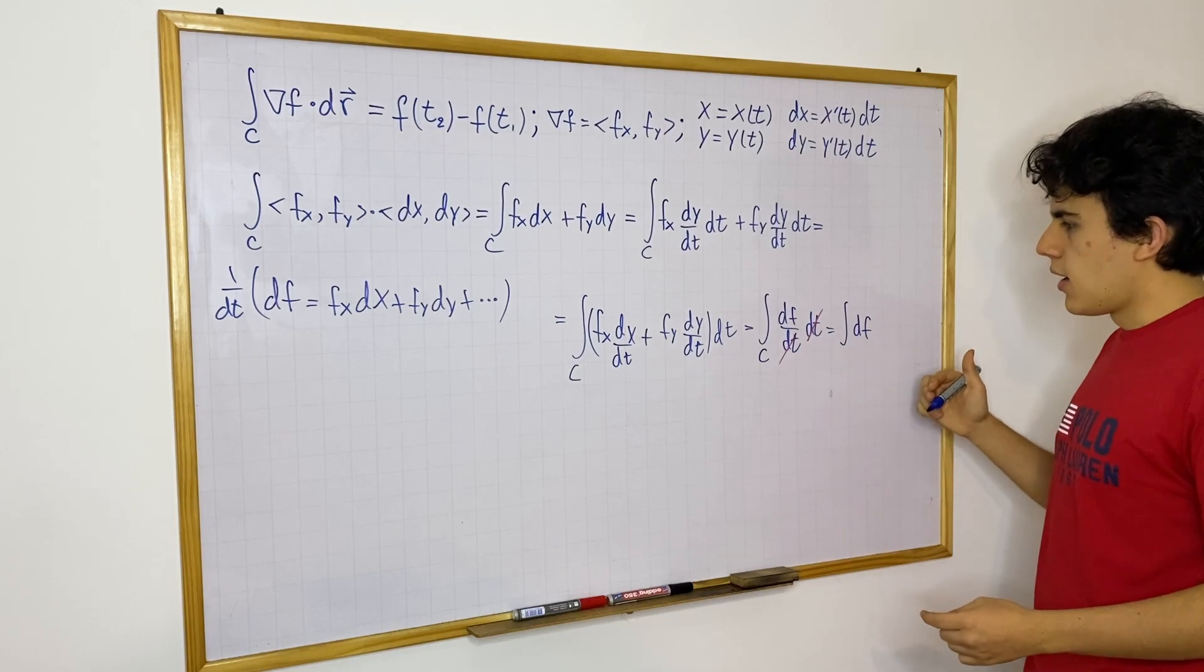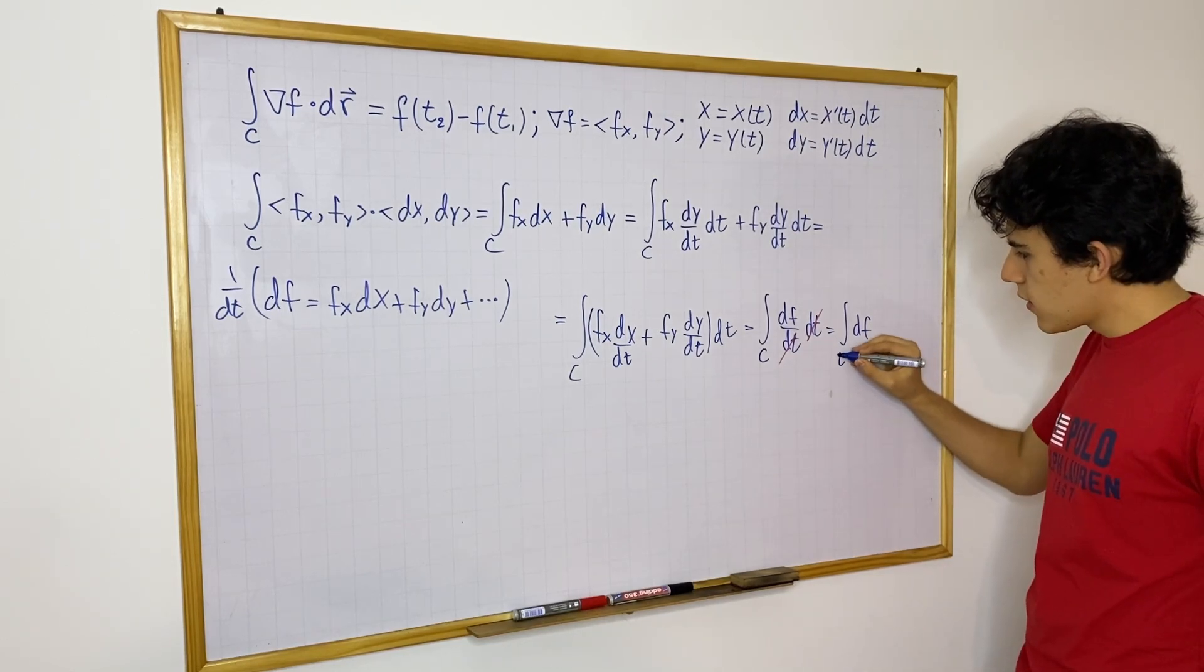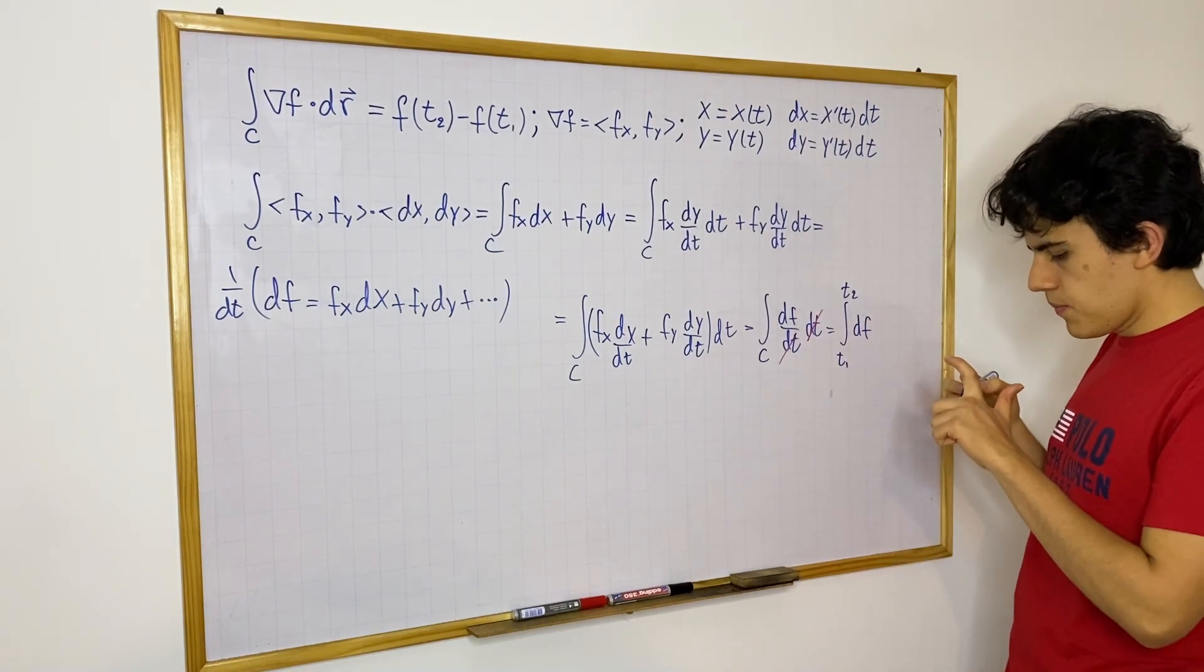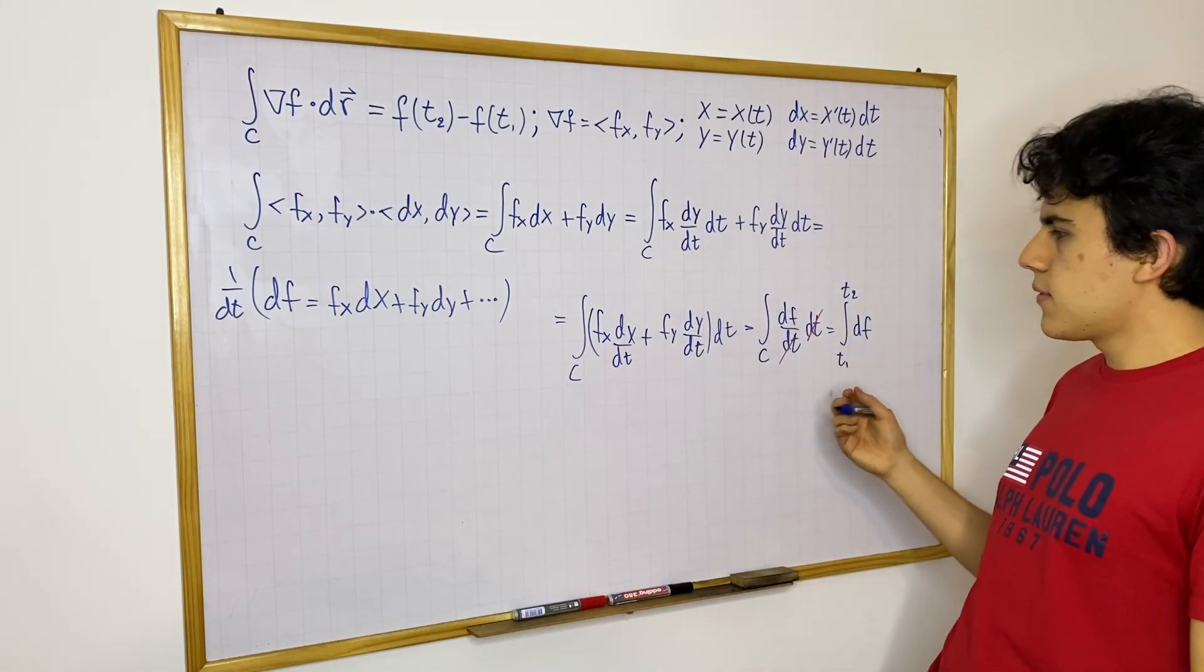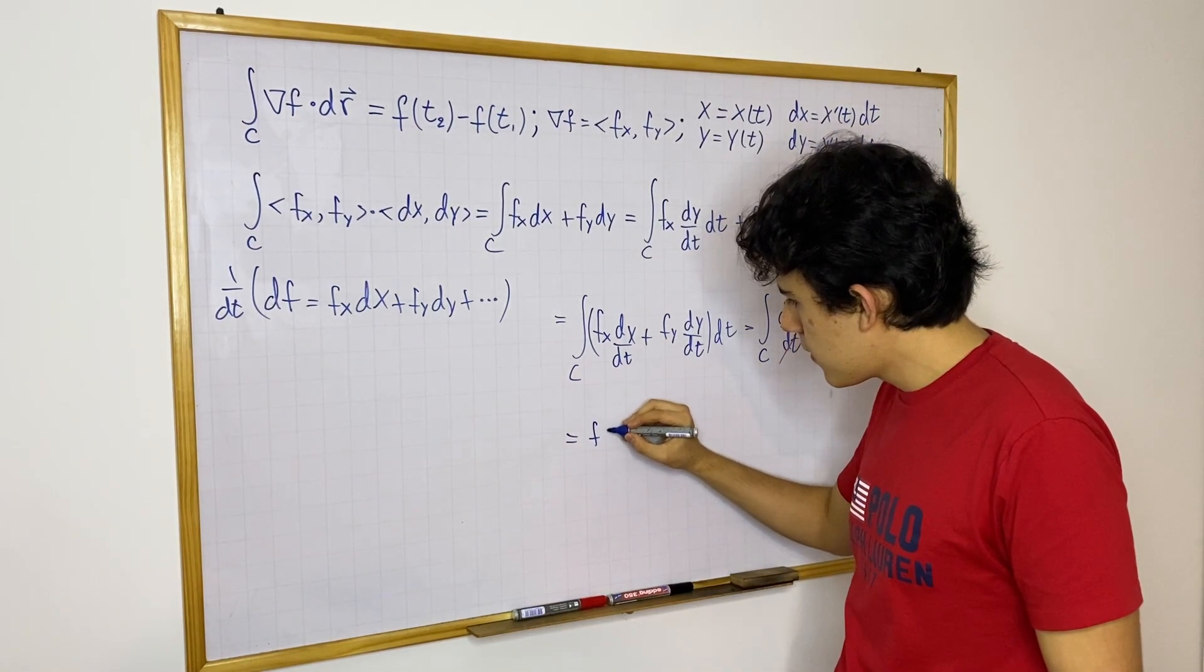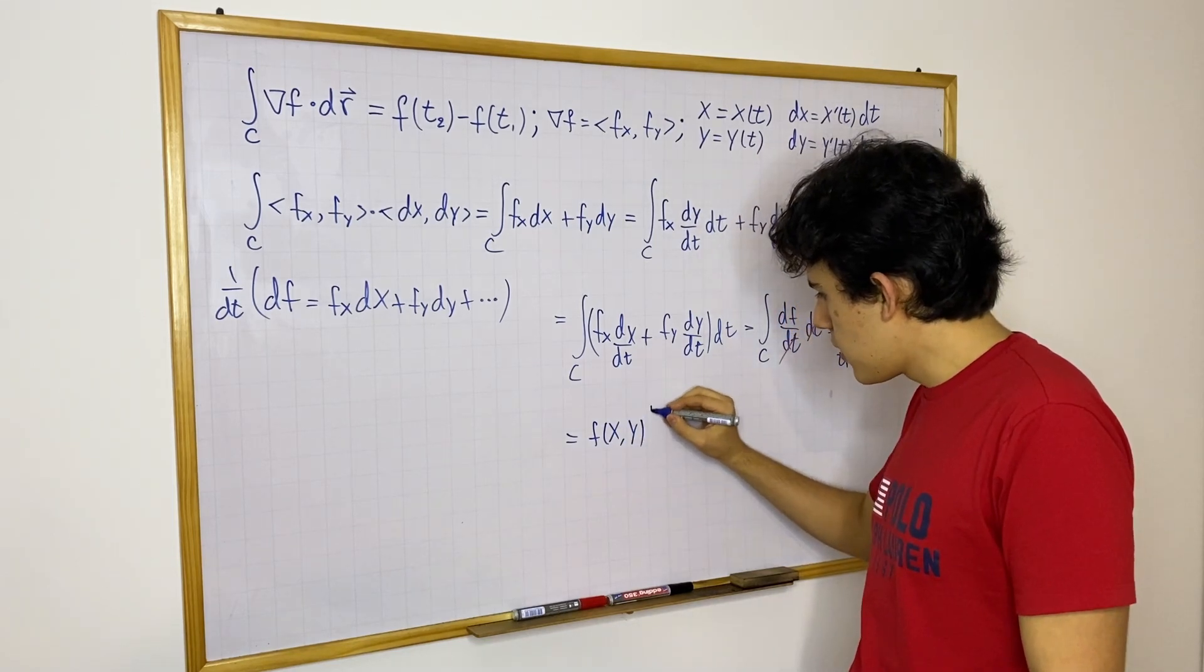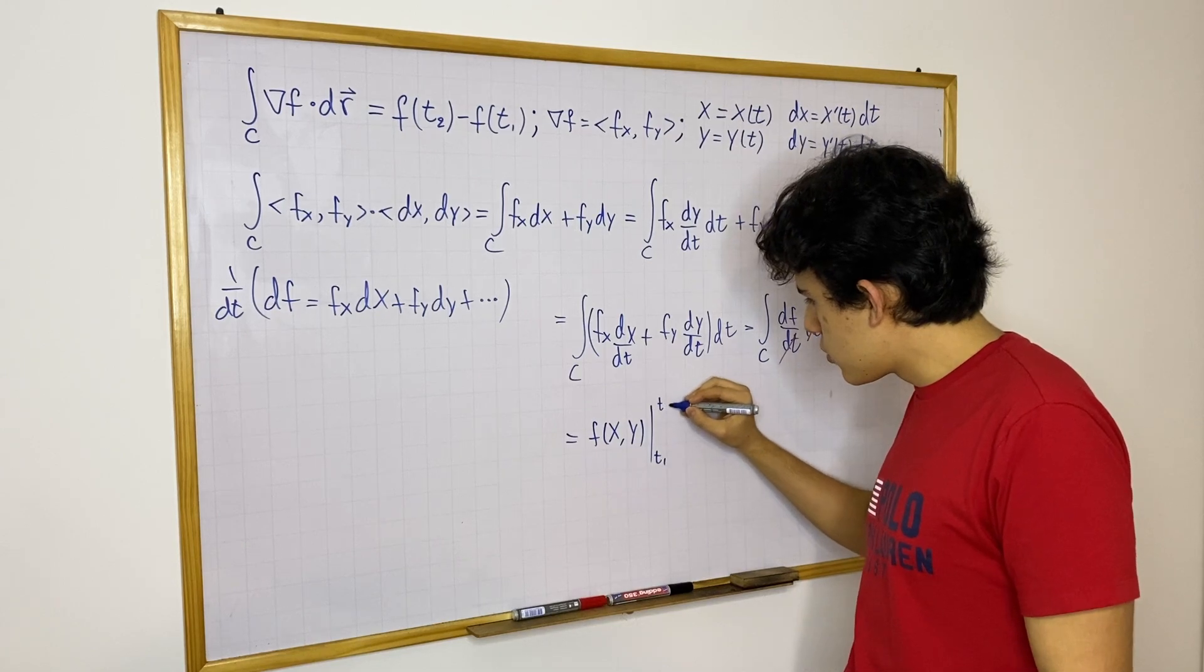And because df, we're really playing in t notation, you could say that you have t1 up to t2. And then, well, you're integrating with respect to f, and you're integrating one, that is just going to be f of x, y, and as many variables as you have, evaluated at t1 and t2.